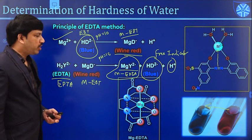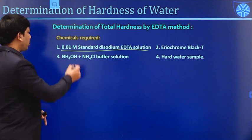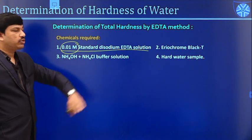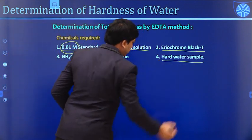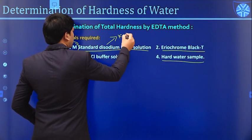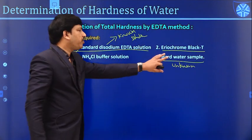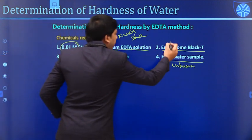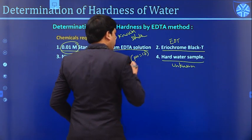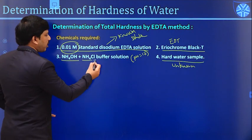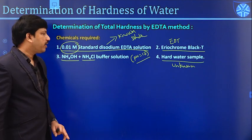Now let us see the procedure. For this titration, we need a 0.01 molar standard disodium salt of EDTA solution, EBT indicator, the hard water sample as the unknown solution, and ammonium hydroxide–ammonium chloride buffer solution to maintain pH 10 throughout the titration. The buffer is essential because EBT is a pH-dependent indicator, and the correct color behavior only occurs at pH 10.